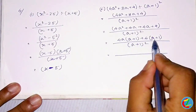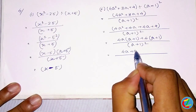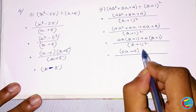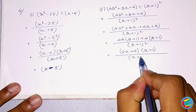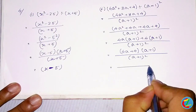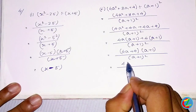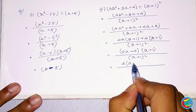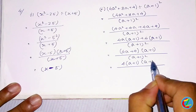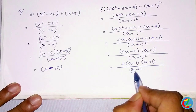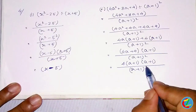So if we factor, we get A plus 1 whole squared. You can write A plus 4 using A plus 1, so we are calling A plus 1 whole squared. The final answer is A plus 1 whole squared.